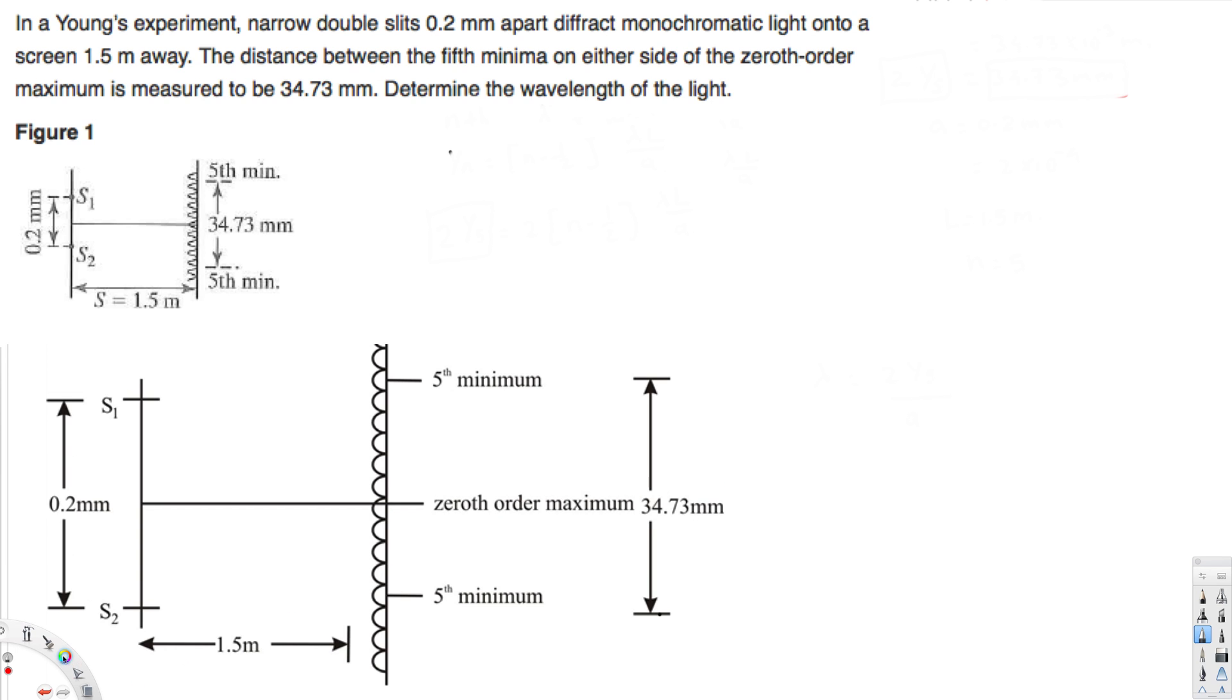Let's look at this problem right here. This question is asking: In a Young's experiment, narrow double slits 0.2 millimeters apart diffract monochromatic light onto a screen 1.5 meters away. The distance between the fifth minima on either side of the zeroth order maximum is measured to be 34.73 millimeters. Determine the wavelength of the light.